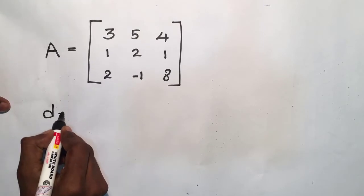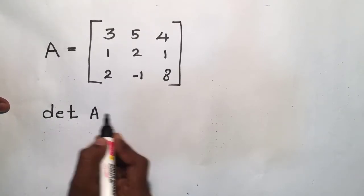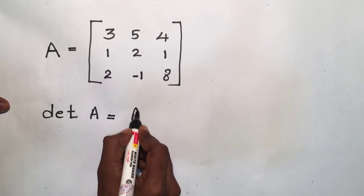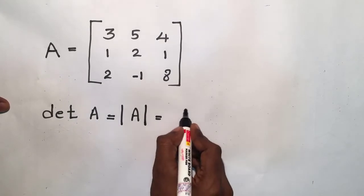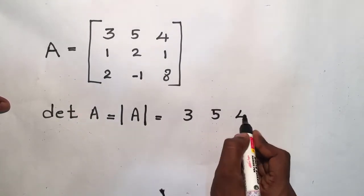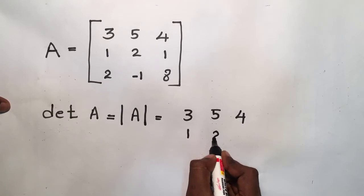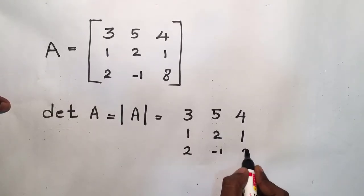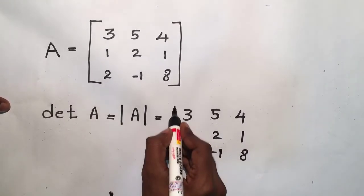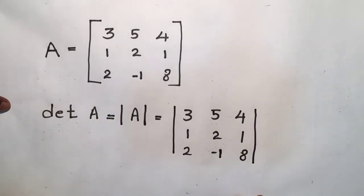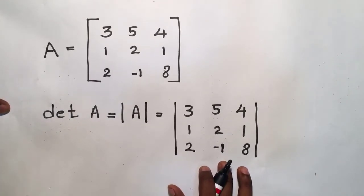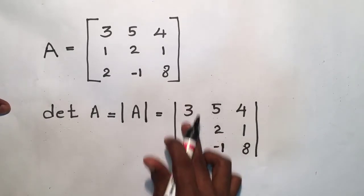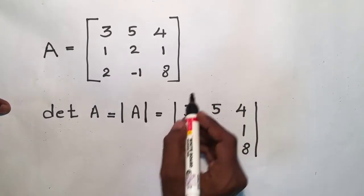We can write it as det A equals |A|. It is also written like this. I'm going to rewrite this matrix. Now I am going to identify the columns of the matrix.